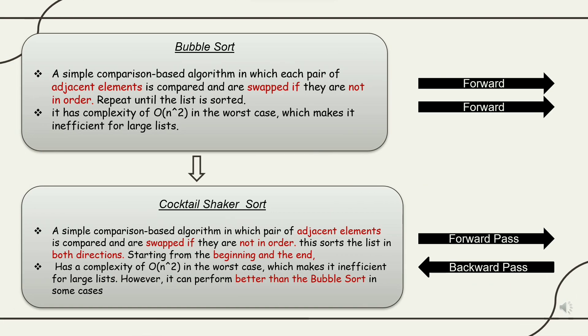The difference between Bubble Sort and Cocktail Shaker Sort: Bubble Sort is a simple comparison-based algorithm in which each pair of adjacent elements is compared and swapped if they are not in order. It has complexity of O(n²) in the worst case, which makes it inefficient for large lists.